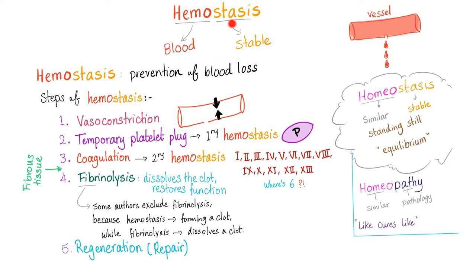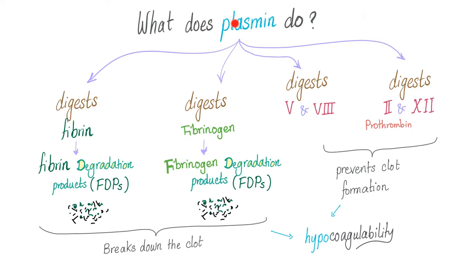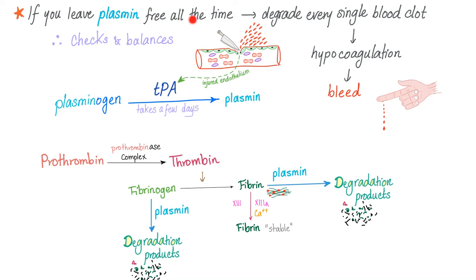As you know, hemostasis — the prevention of blood loss — has many steps. We've talked about vasoconstriction, the temporary platelet plug, and coagulation. Now we're talking fibrinolysis. Plasmin digests fibrin into FDPs, digests fibrinogen into FDPs, and digests factors 5 and 8, as well as 2 and 12. If you leave plasmin free all the time, it will degrade every clot and you will bleed.